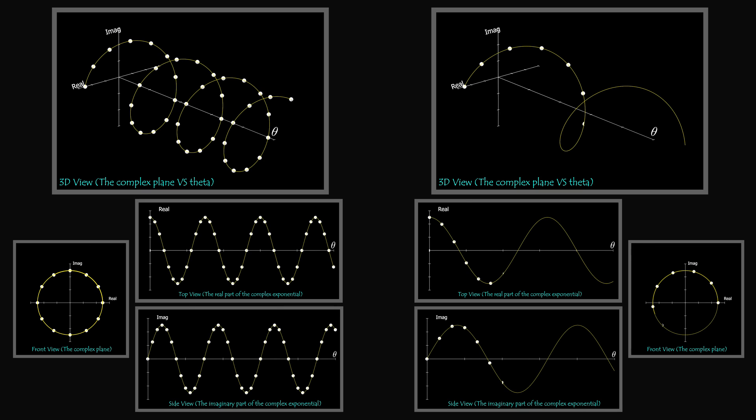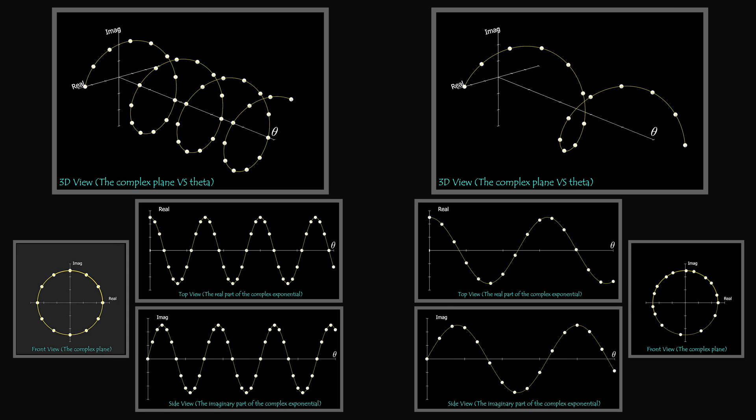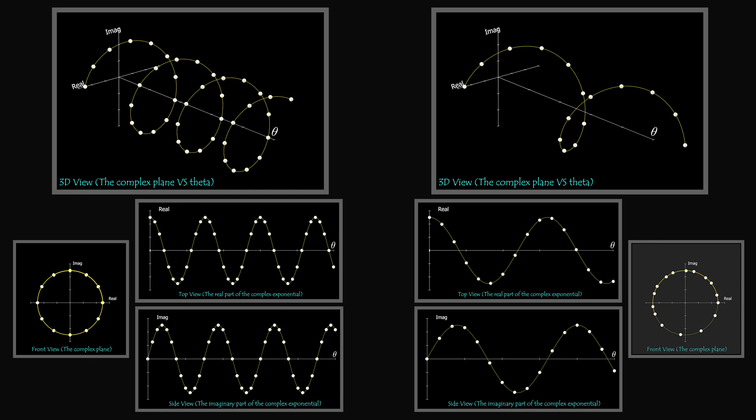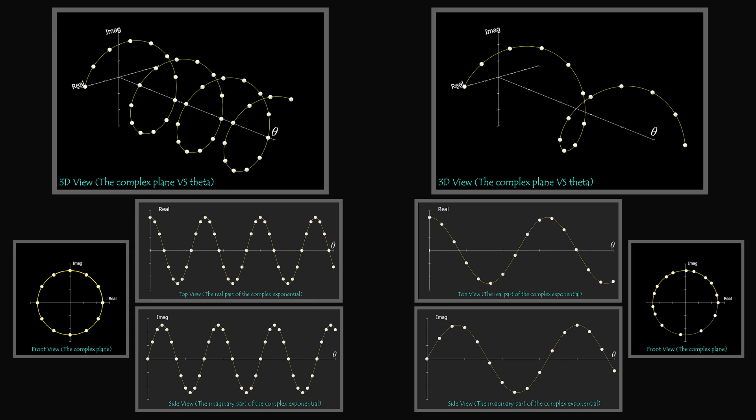If the frequency is not rational, then the sequence is not periodic. Looking at the complex plane, the samples of periodic discrete time signals are equally spaced and aligned with each other, unlike in non-periodic signals. The same applies to discrete time cosine and sine functions — they are just the real and imaginary parts of the complex exponential.